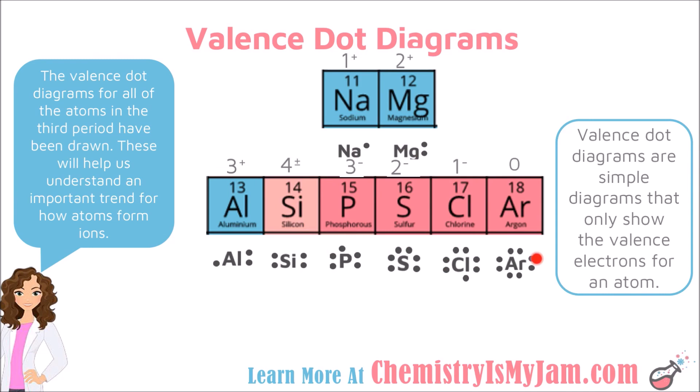Argon already has a full octet. It is not going to give away, share, or take electrons. Argon is not going to take a charge, so we would put a 0 above that one.